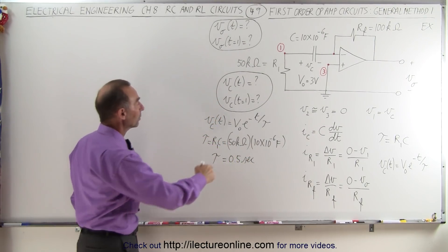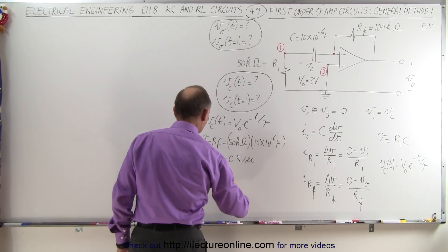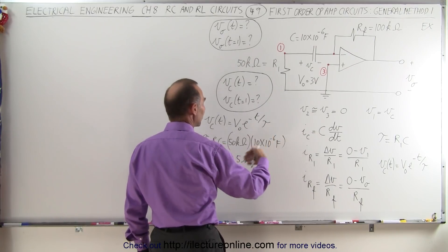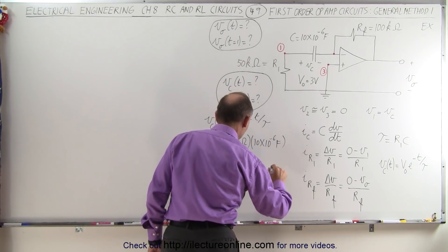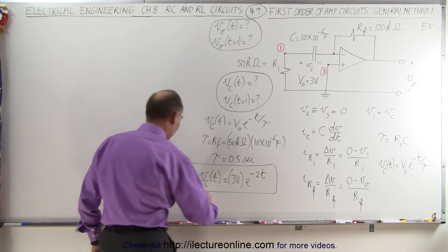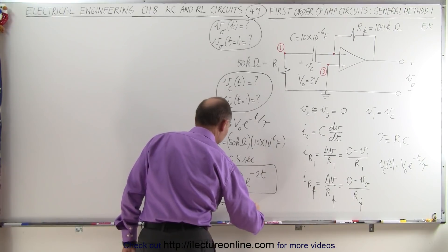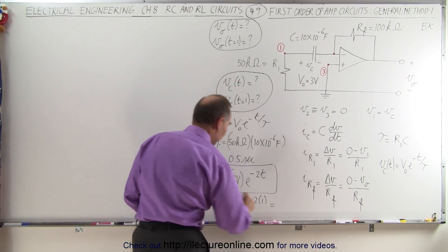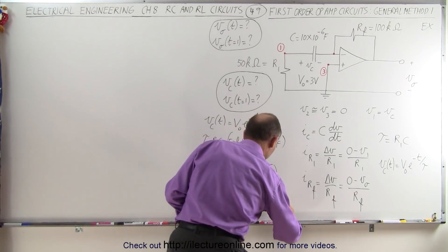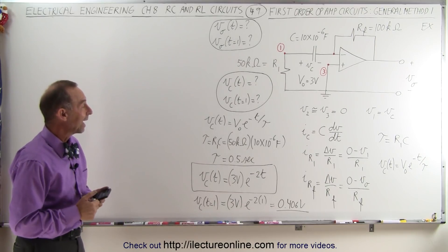Now we can plug that in. We know the original voltage, so the voltage across the capacitor as a function of time equals 3 volts times e to the minus 2t — since dividing by 0.5 is the same as multiplying by 2. To find the voltage across the capacitor after one second, we evaluate at t equals 1: 3 volts times e to the minus 2 times 1, which requires a calculator and gives 0.406 volts.